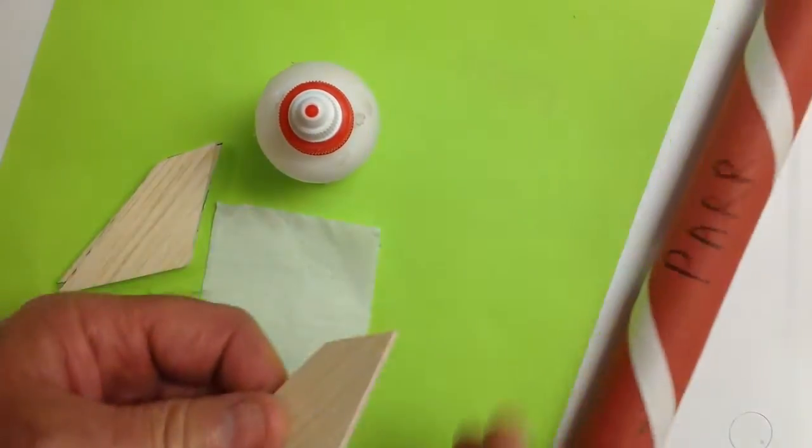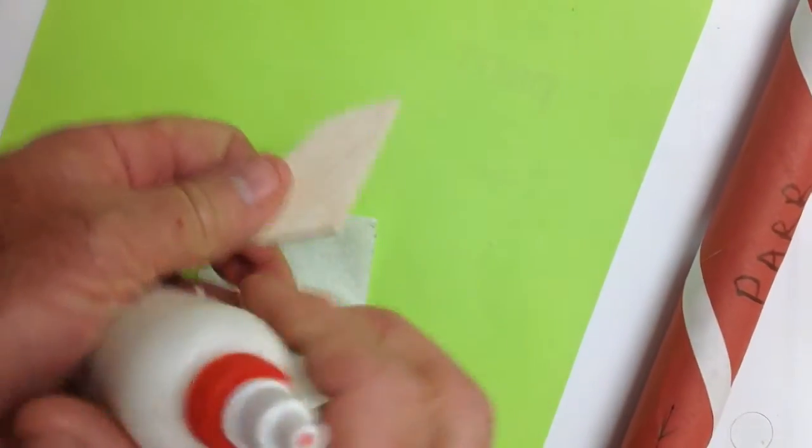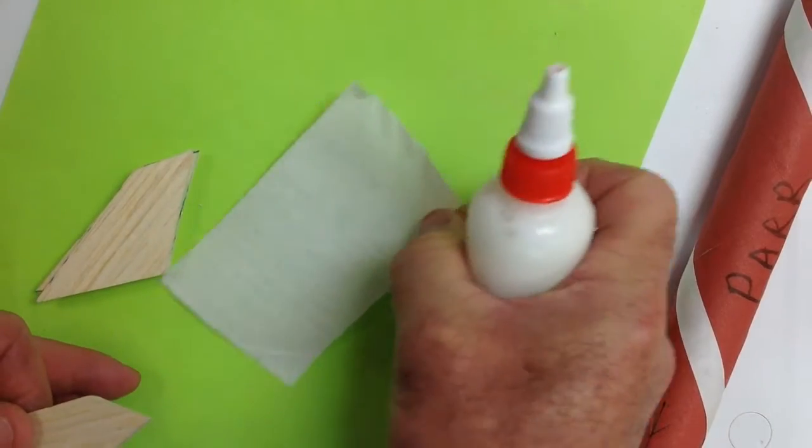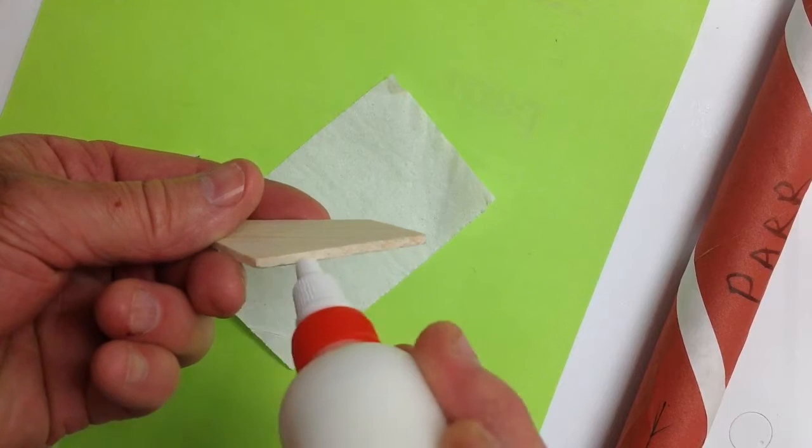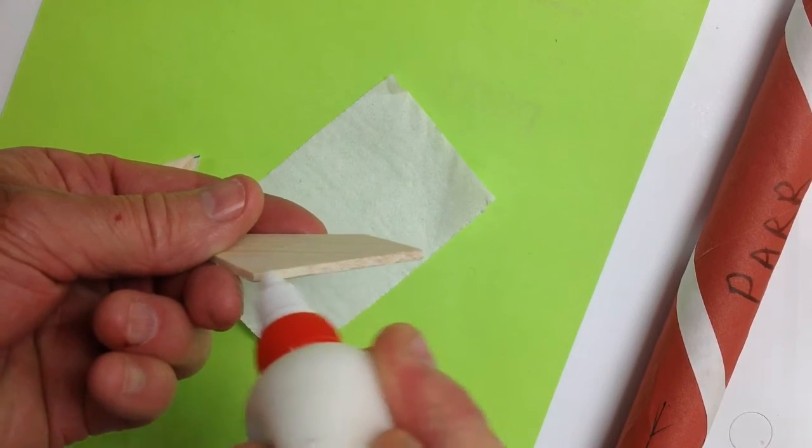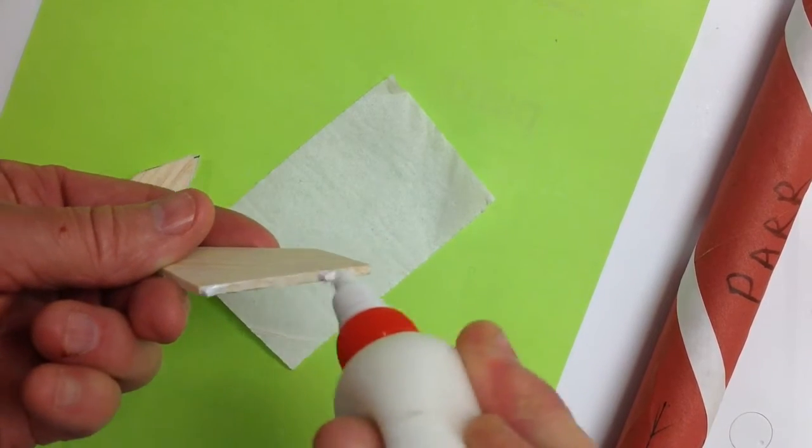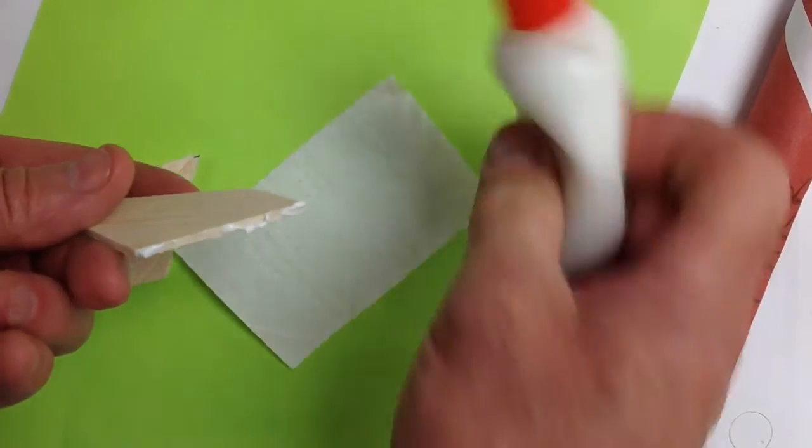When you glue your fins on, you'll use tacky glue. And notice that I have a little paper towel so I can close the cap and wipe it so that it can be used later. Put glue, tacky glue, thin coating on the edge of your fin.